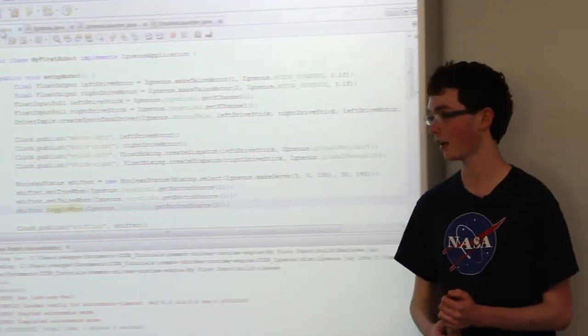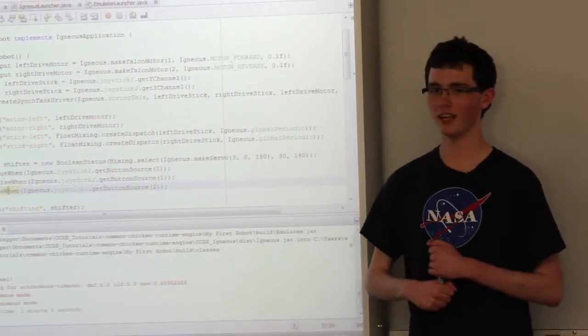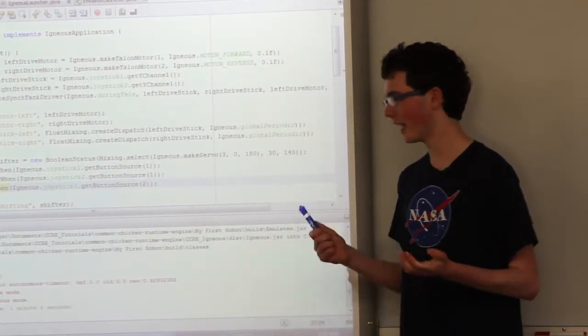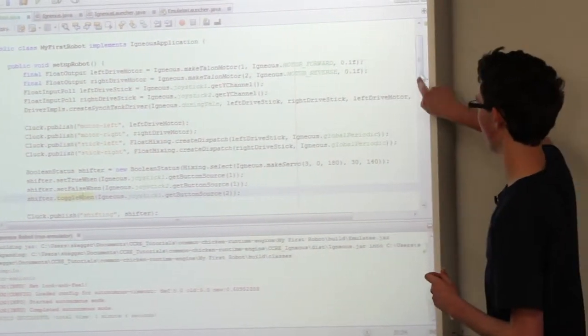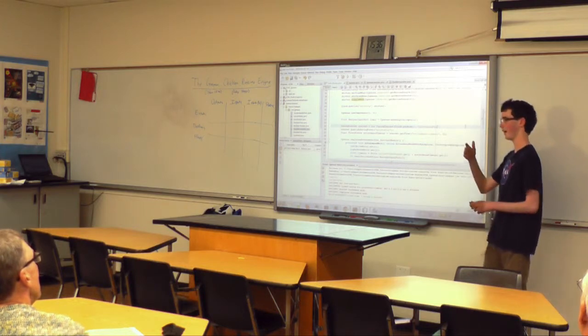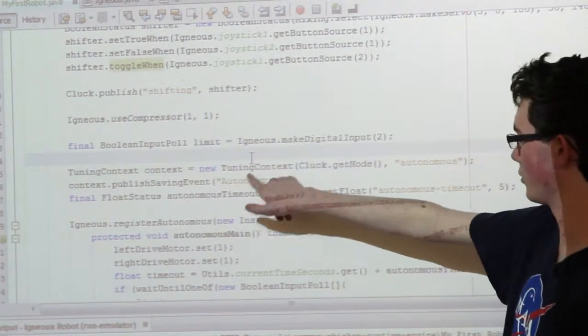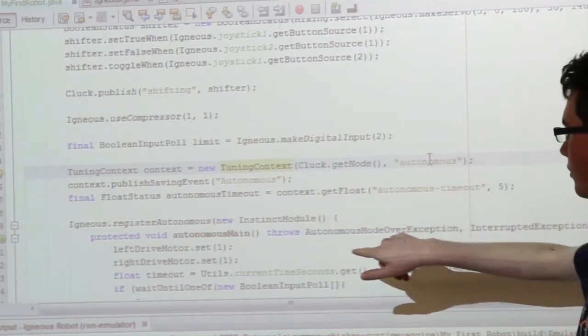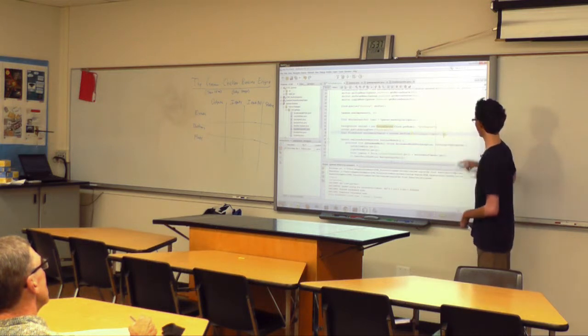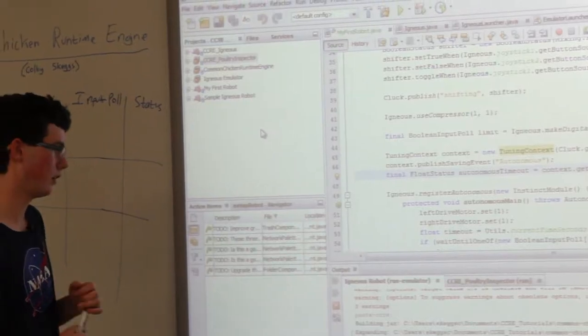There's also the problem where you try your autonomous mode and you want to change something about it. You wait two minutes for the code to download. We have a tuning framework which allows you to, over the network, just say change this value to that if you've set it up like that. Then it gives you a button so you can save that on the robot. The next time the robot starts up, it uses the same value again.